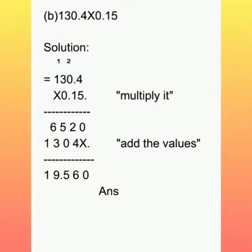Now it's time to solve the B part. 130.4 multiplied by 0.15. Again we have to write the solution. After writing the solution, we have to write the values: 130.4 multiplied by 0.15. We have arranged these two numbers.